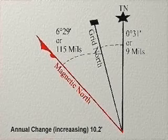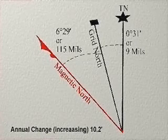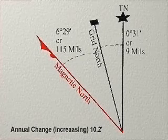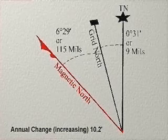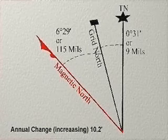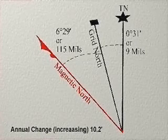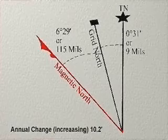Magnetic north, the compass north, is a physical location to which all compass needles of the world point. It is generally accepted to be the area encompassing the Baffin Islands in northern Canada. It is the point of convergence of the Earth's electromagnetic field, which is moving continuously. This is why you must calculate the magnetic declination from one year to the next.